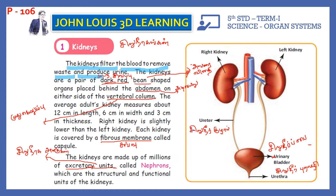The bean-shaped organs are placed behind the abdomen, on either side of the vertebral column.